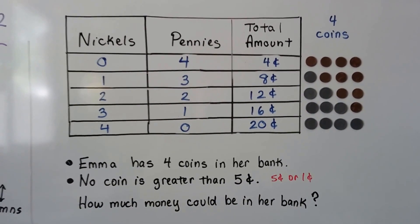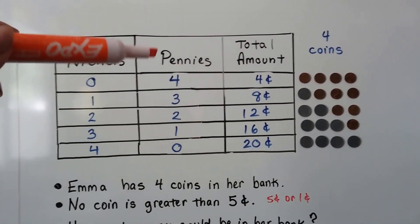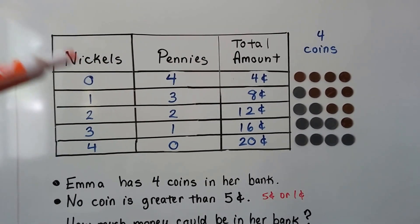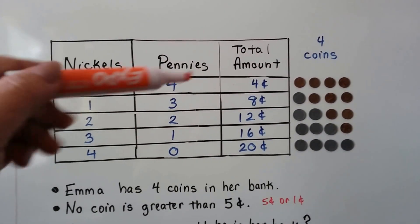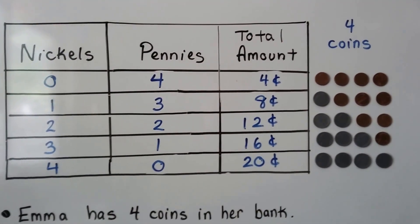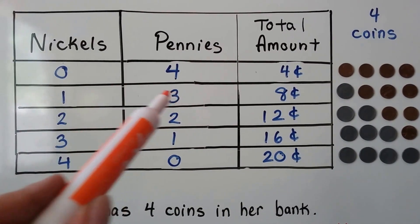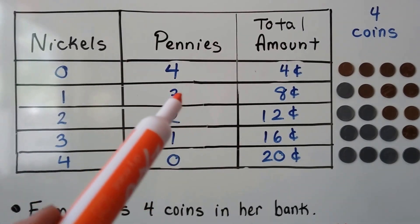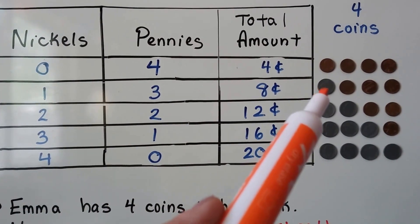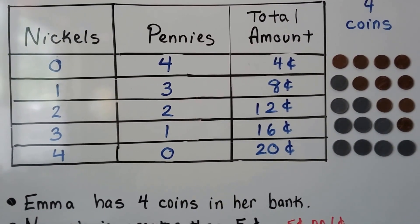We want to find how much money could be in her bank. We know she has four coins, so we start with four pennies and no nickels — that's four coins, and she would have four cents. If she had three pennies and one nickel, that would be four coins and she would have eight cents: five, six, seven, eight cents.